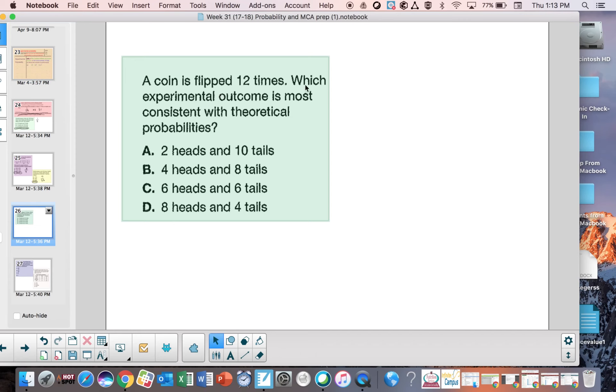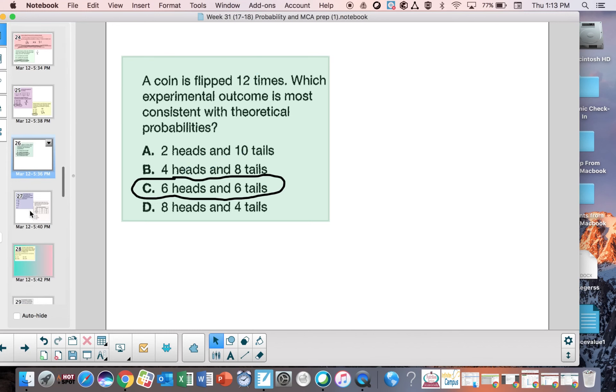A coin is flipped 12 times. Which experimental outcome is most consistent with theoretical probability? With a coin, if it's flipped 12 times, we would expect it to happen 50-50. So we would cut this number in half and expect six heads and six tails.